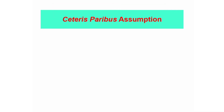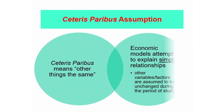Ceteris Paribus is a Latin phrase which means 'other things the same.' Economic models attempt to explain simple relationships; they focus on the effects of only a few forces at a time. Ceteris Paribus means that other factors are assumed to be unchanged during the period of study. For example, gusto nating malaman kung gaano katagal manghulog yung apple mula sa puno papunta sa baba. So yung concern natin ay yung time. Of course, there are many factors that can affect time — we have the distance from the tree to the ground, the wind, the environment,